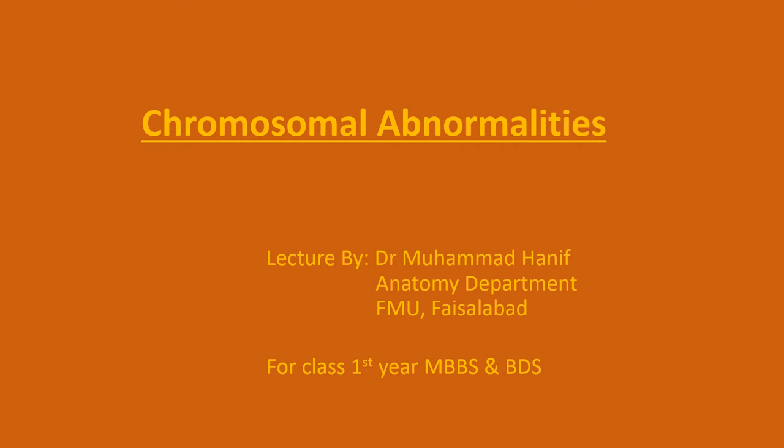Assalamu alaikum dear students. During the last lecture on cell division, we learned about the formation of new cells by the process of mitosis and meiosis. During both processes, a very important event was the duplication of chromosomes. During mitosis, sister chromatid separation results in 46-chromosome new cells. In meiosis, separation of homologous pairs occurs. An important event during meiosis one is synapse formation and crossing over of genetic material. All these events may lead to chromosomal abnormalities.